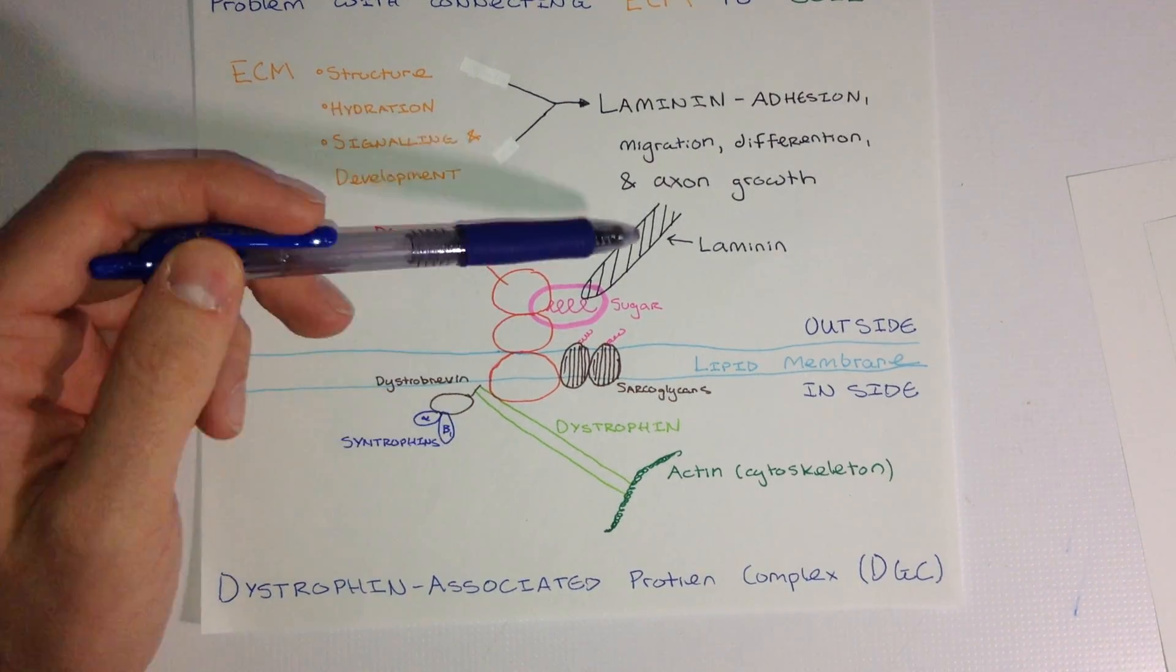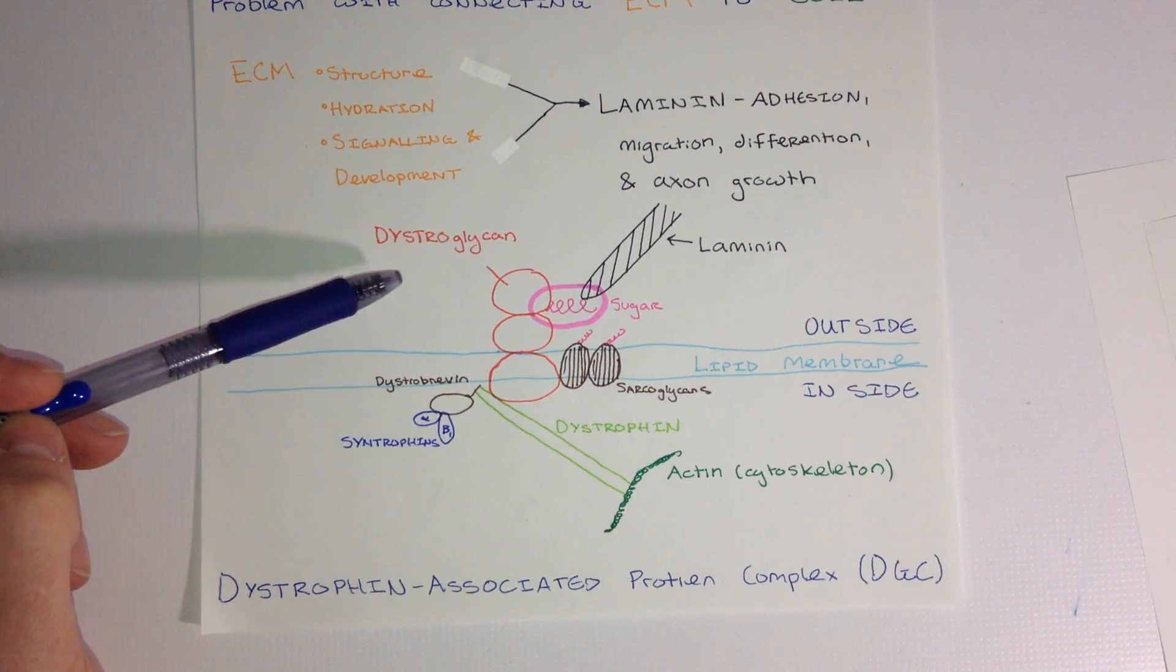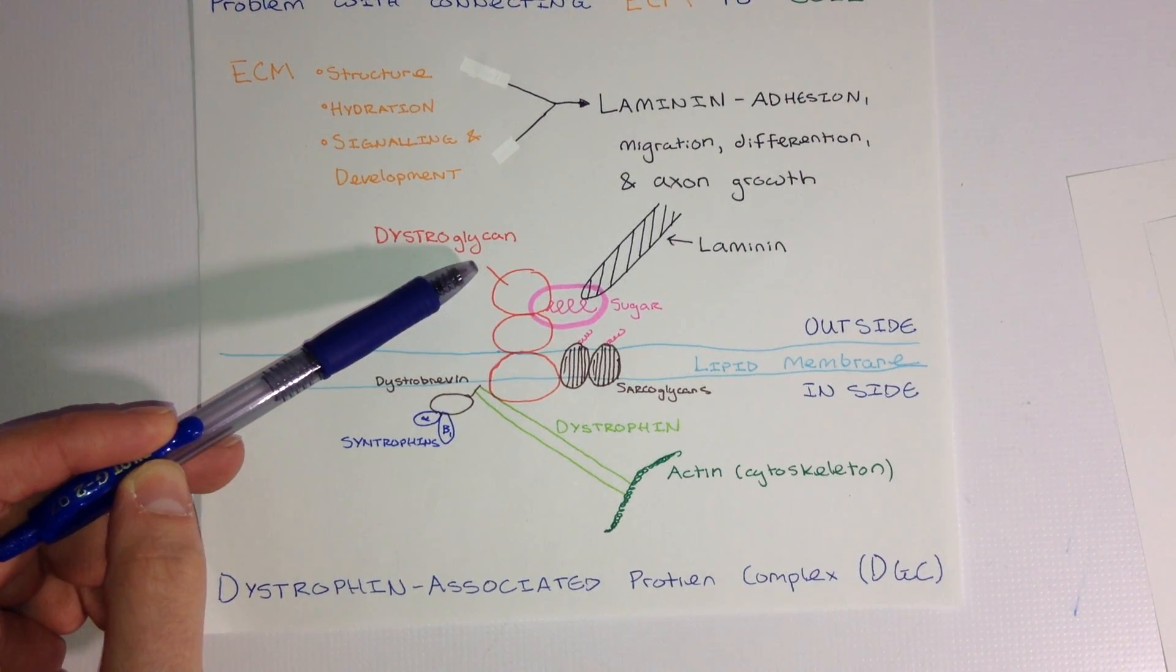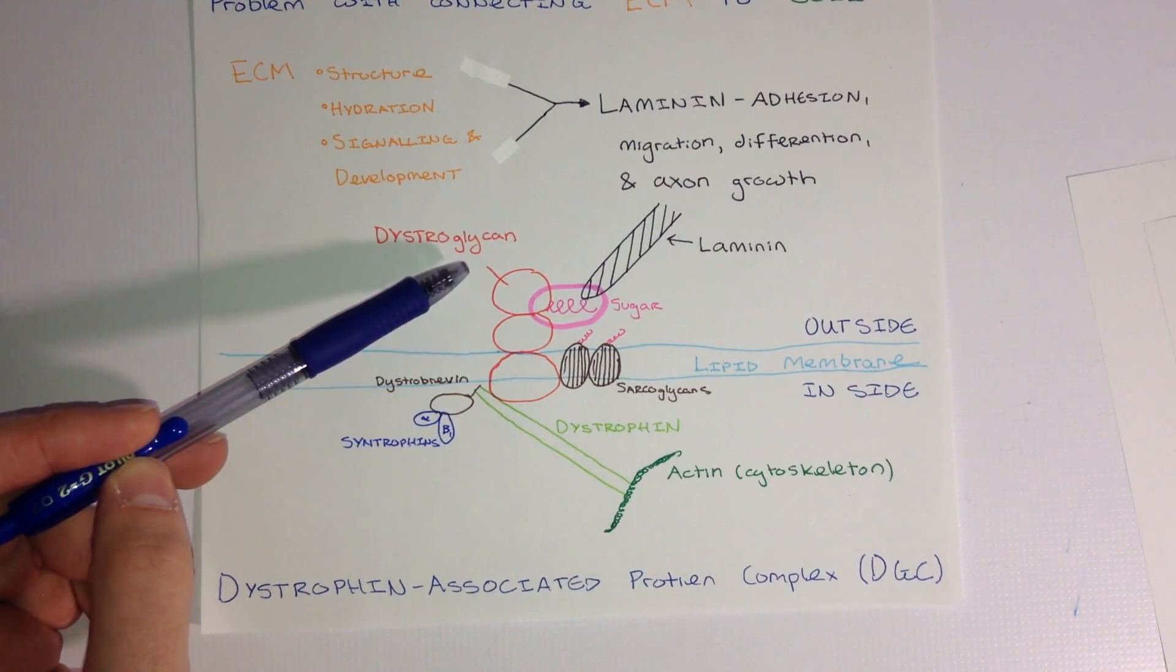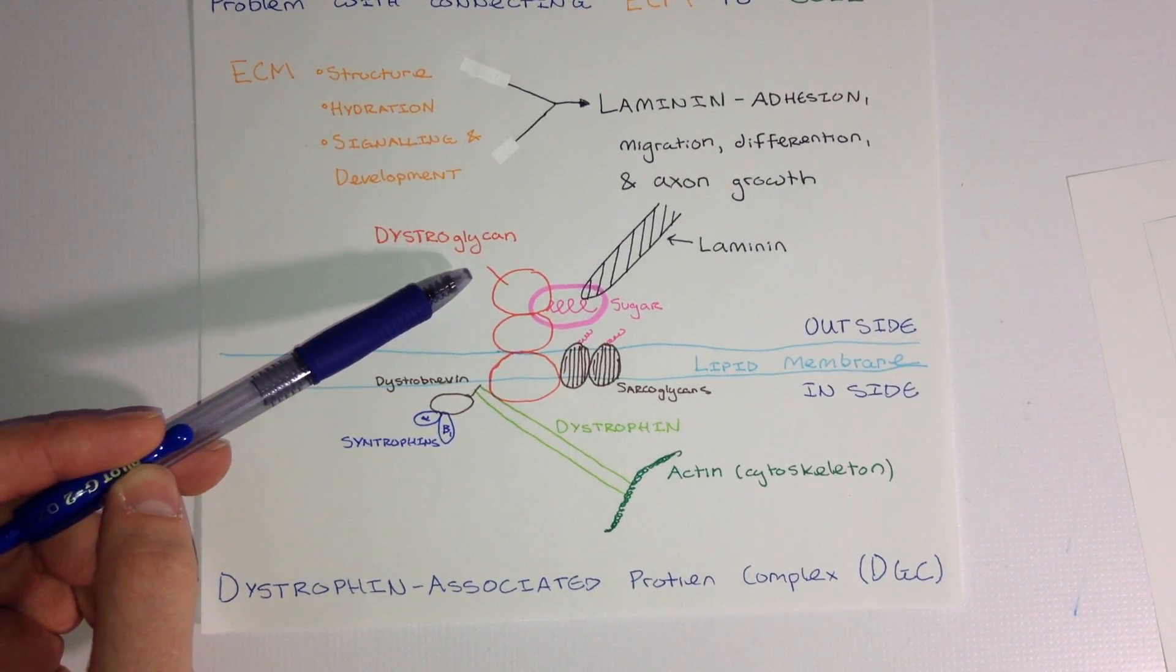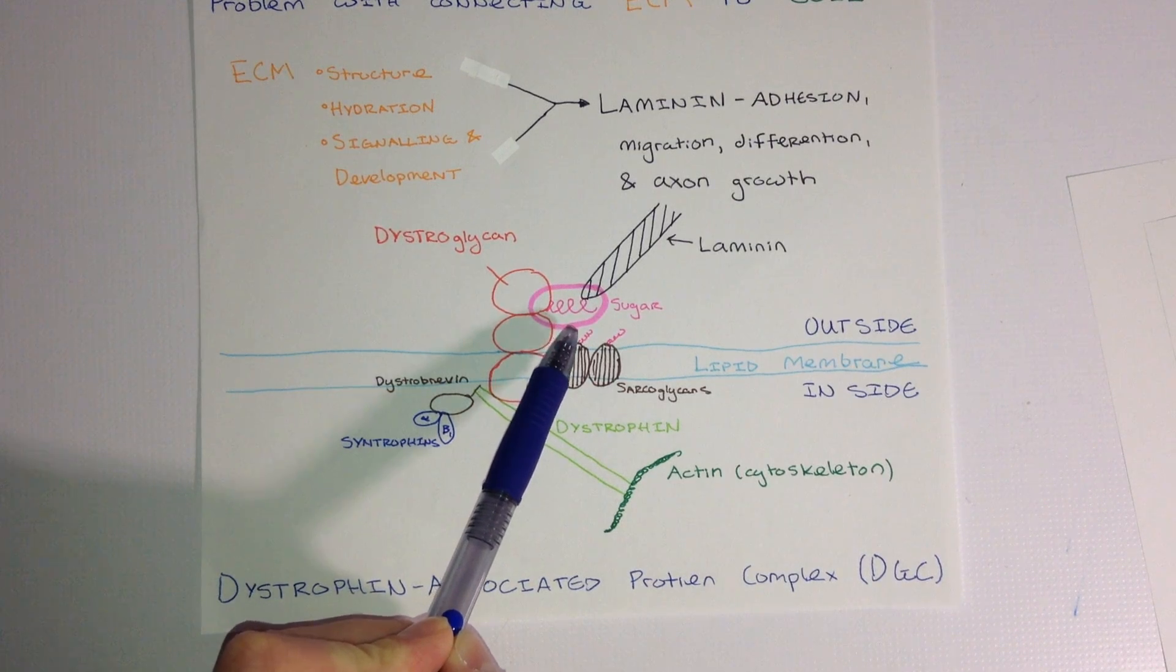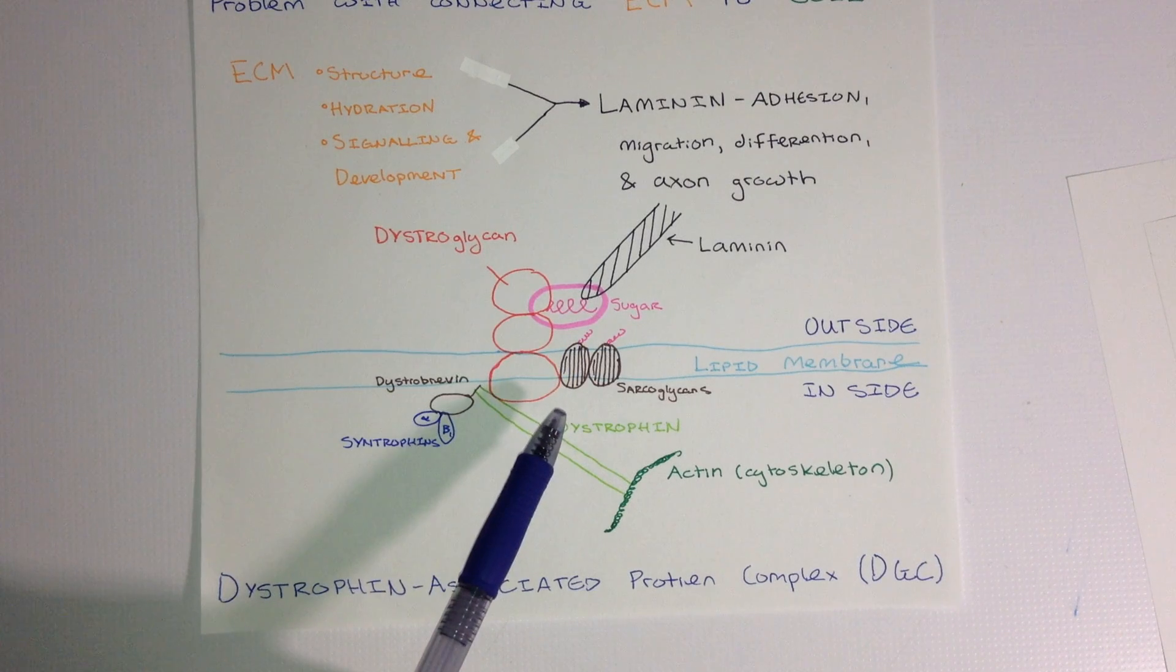So, the laminin protein is connected via distroglycan. Distroglycan is a glycoprotein, meaning that it contains both a protein part with a post-translational modification of a sugar group added on. I have highlighted a sugar group added on in this cartoon here in pink, which serves as the connection point from the laminin to the rest of the cell.